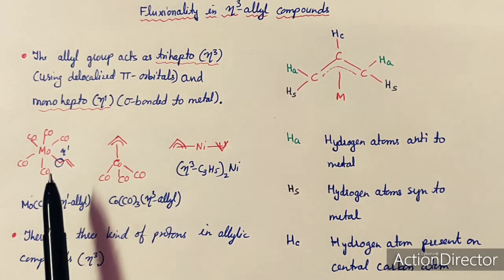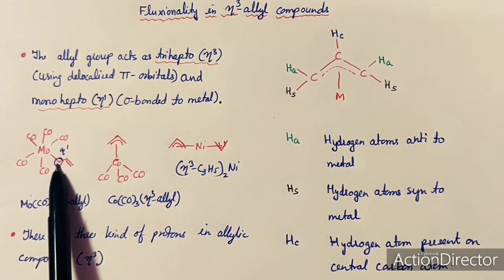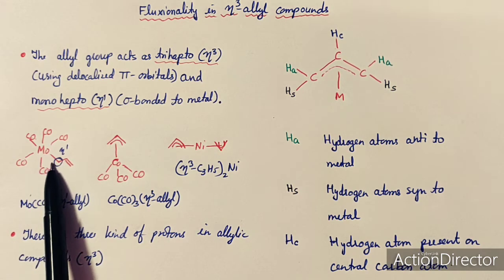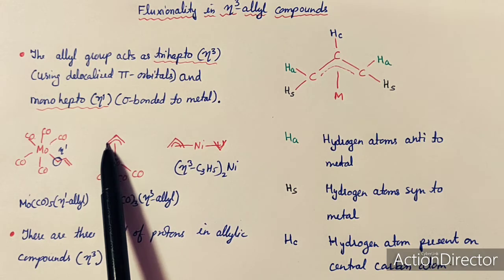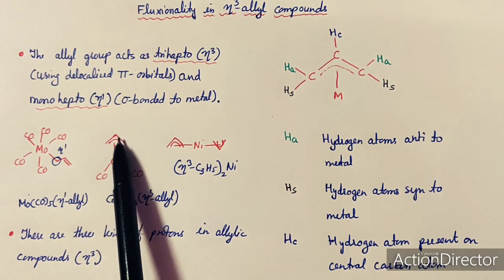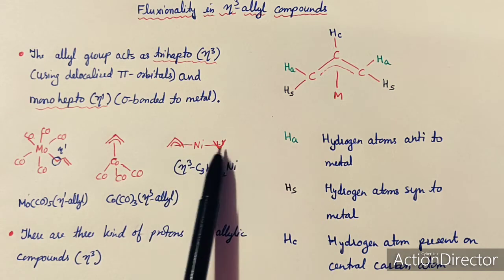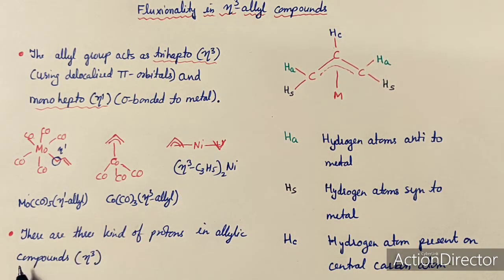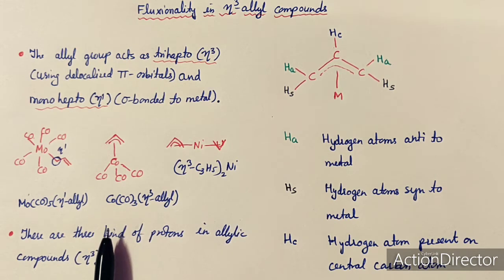Here you can see that this allyl group is attached to this metal, that is molybdenum, as Eta-1, forming the sigma bond with molybdenum. This is the Eta-1 form of the allyl group. In another example, all three carbon atoms of the allyl group are attached to the central atom, so it is Eta-3 binding. If you know both types of bonding, you can easily understand the fluxionality behavior of Eta-3 allyl complexes.